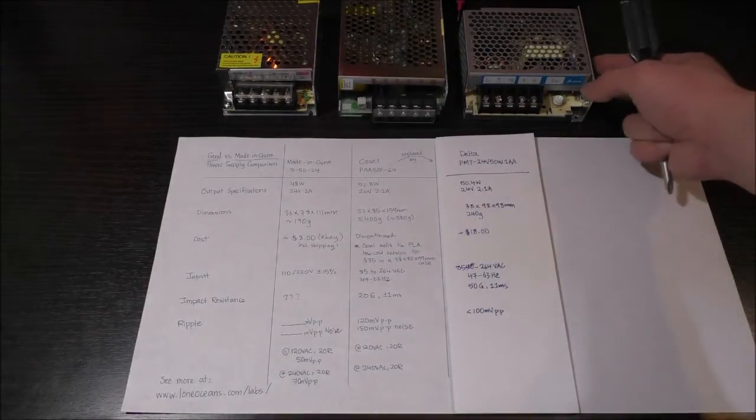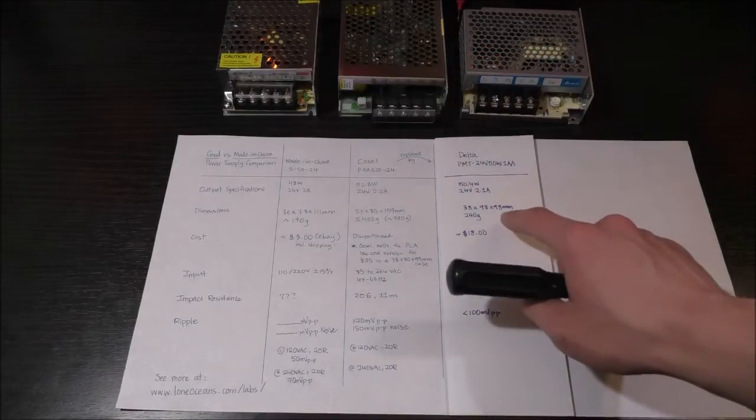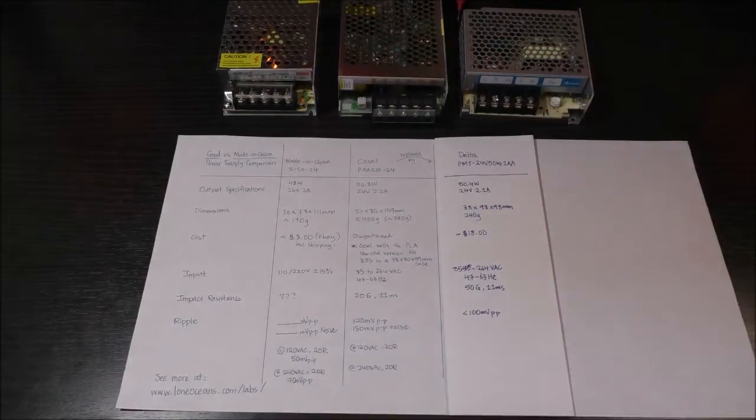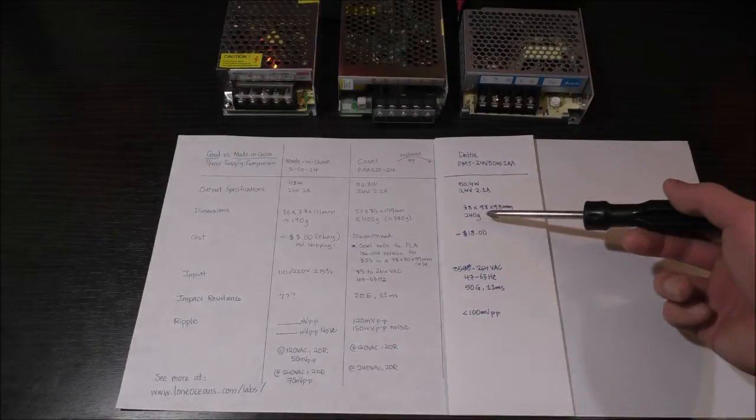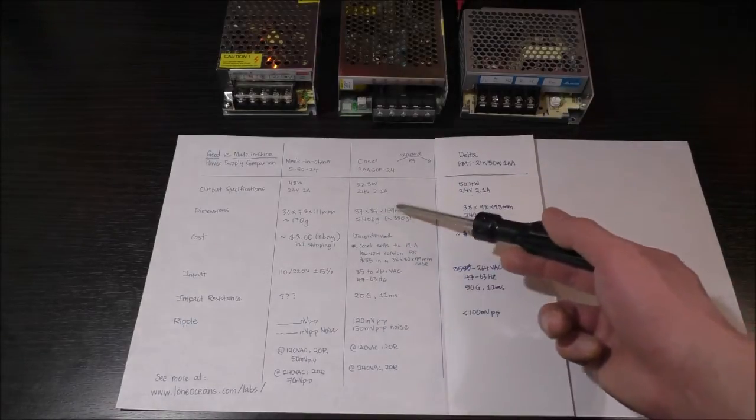As we can see, the Delta power supply has a much smaller footprint than the CoSel power supply, and it's just about the same size as the Chinese power supply, and it weighs in at 240 grams. So somewhere in between the cheap Chinese one and the CoSel power supply.